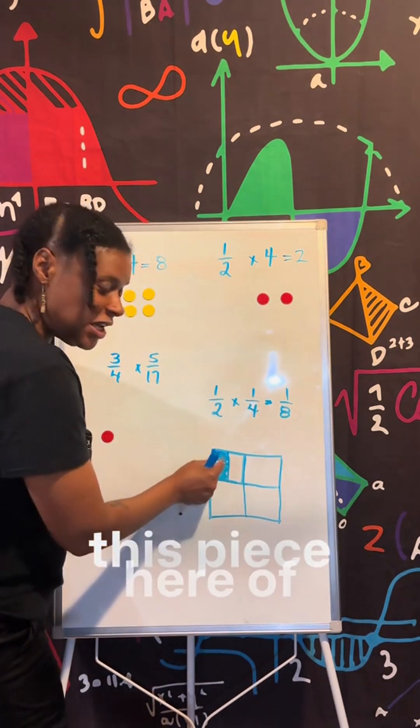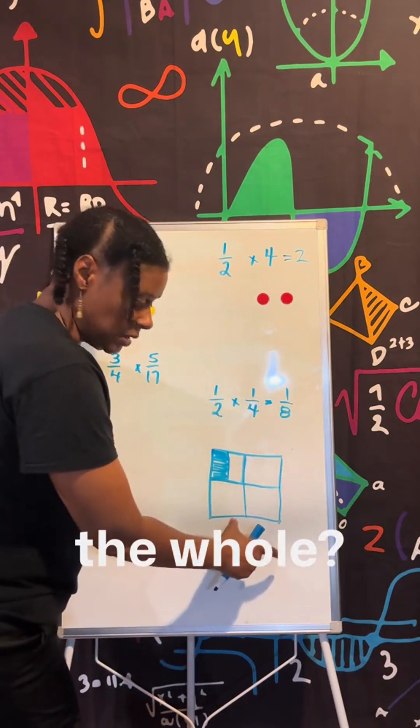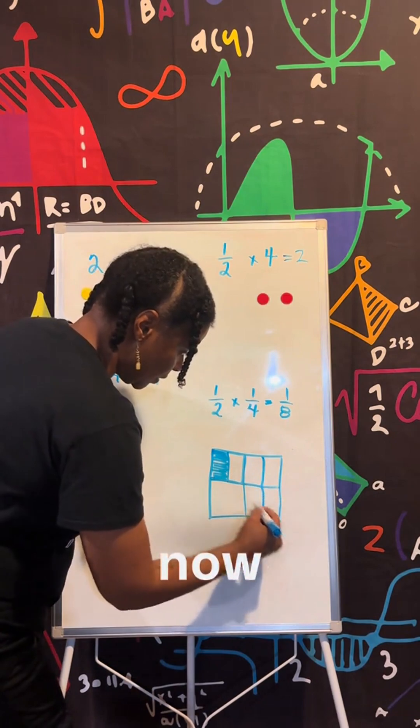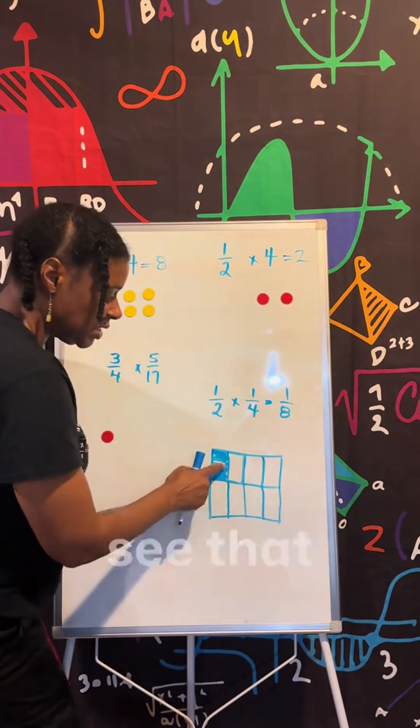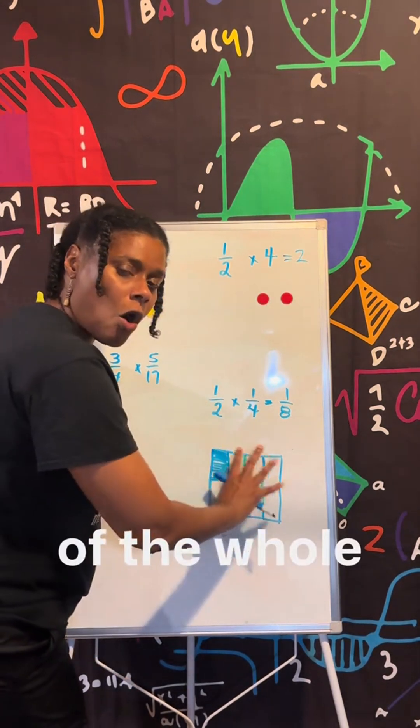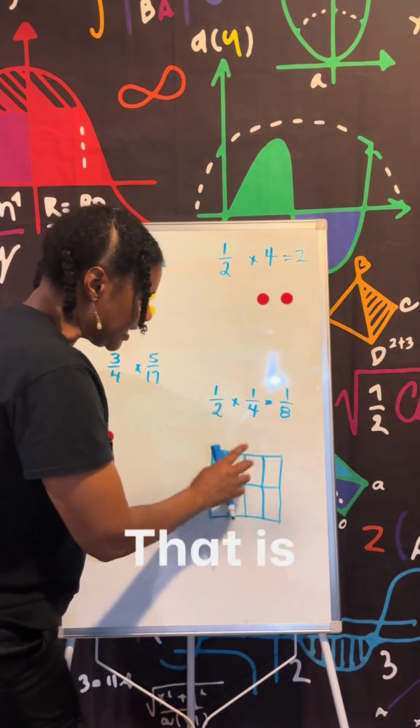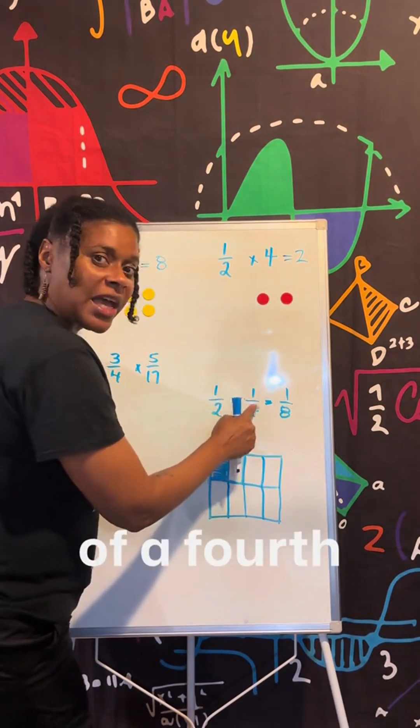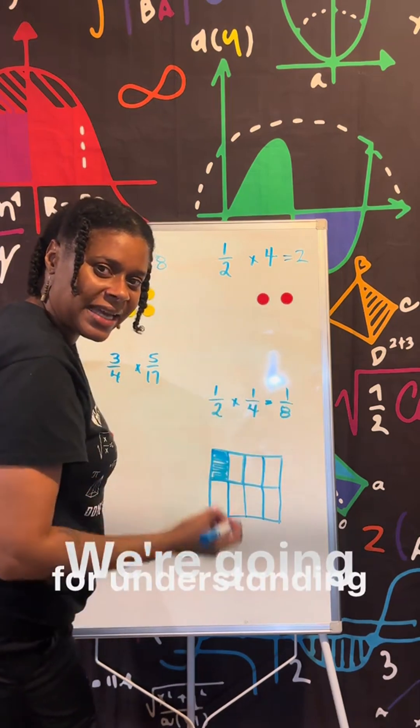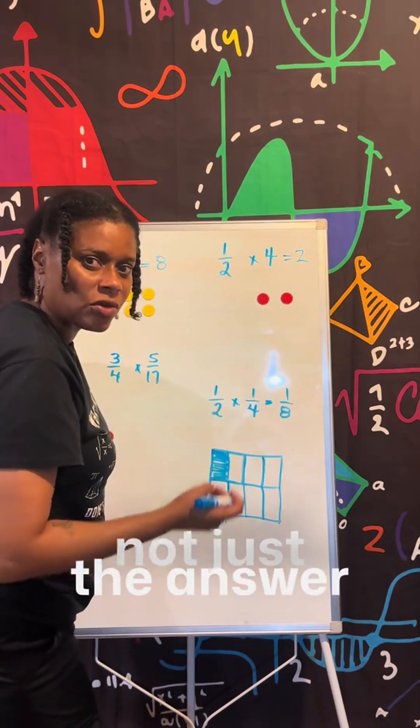What is this piece here of the whole? Right. All right. So that means I want to cut them all now. And now you'll see that this piece makes up an eighth of the whole piece. That is half of a fourth is an eighth. We're going for understanding, not just the answer or computation.